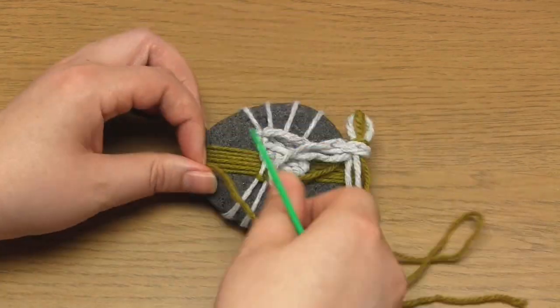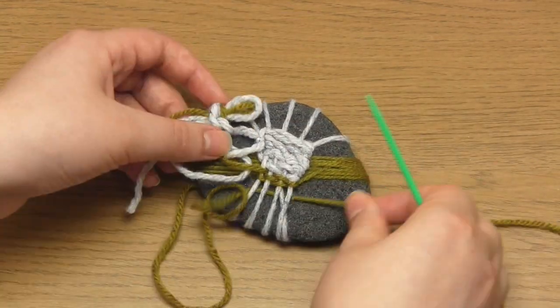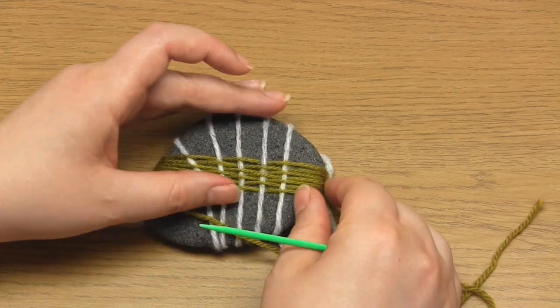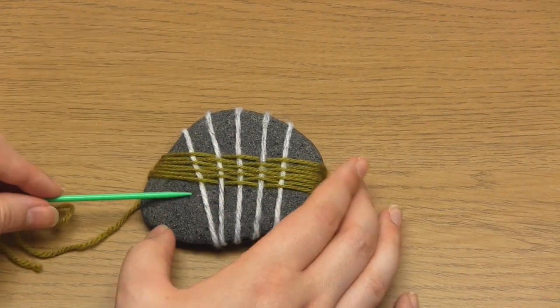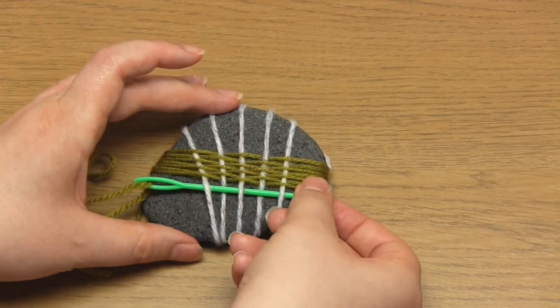As you weave, make sure you always alternate going above or below the strands and also keep an eye on the strands to make sure they stay where you want them. They do have a tendency to stray.